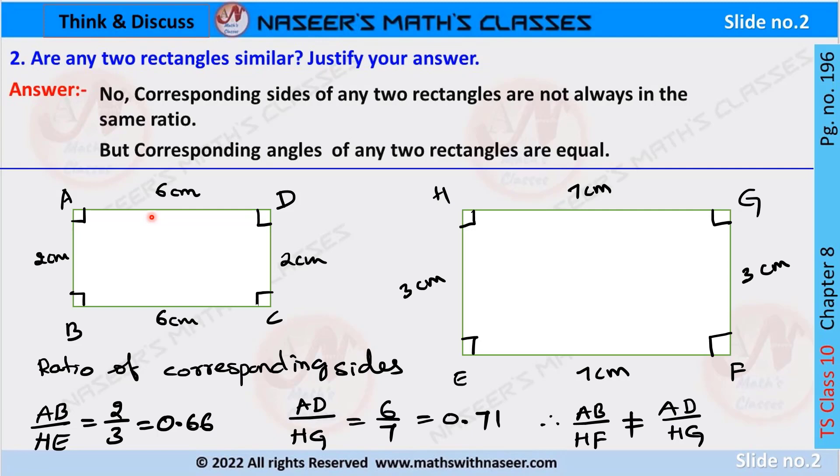First one is ABCD with measurements 2 and 6 as their adjacent sides. In rectangle EFGH, measurements of adjacent sides are 3 and 7 centimeters. We already know that in a rectangle, each angle is equal to 90 degrees.